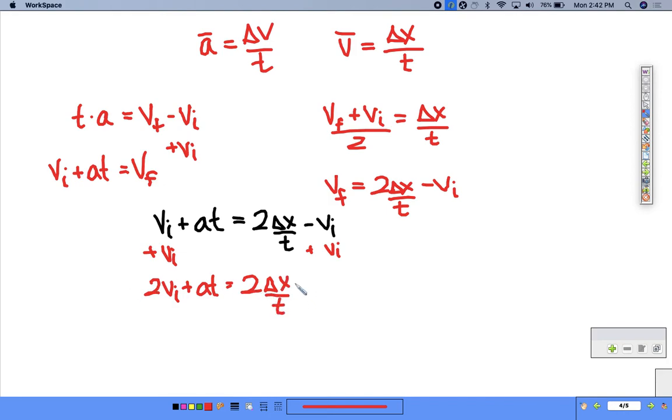I don't like that t on the bottom, so we're going to multiply by t on both sides and have 2 vi t plus at squared equals 2 delta x.